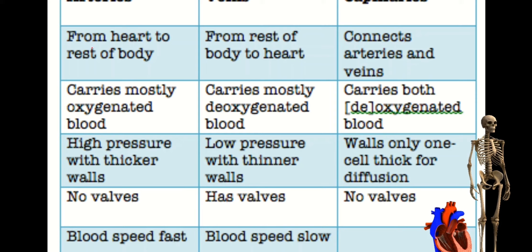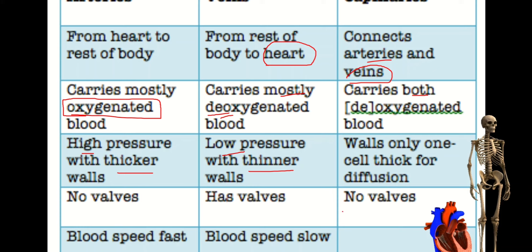Arteries carry blood from the heart to the rest of the body. Veins carry blood from the rest of the body back to the heart. Capillaries connect arteries and veins. Arteries carry mostly oxygenated blood, veins carry mostly deoxygenated blood, and capillaries carry both. Arteries have high pressure with thicker walls, veins have low pressure with thinner walls, and capillary walls are only one cell thick for diffusion. Blood speed in arteries is fast; in veins it is slow.